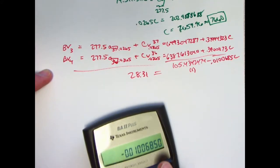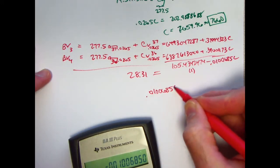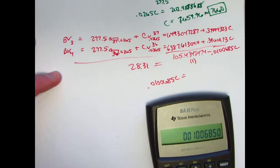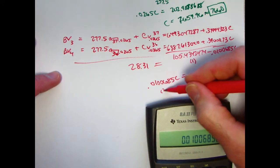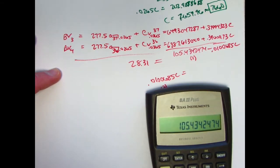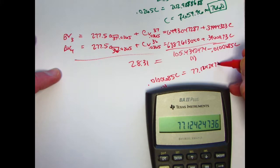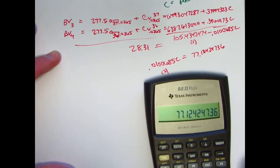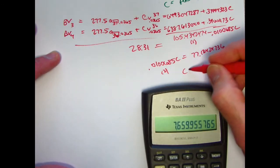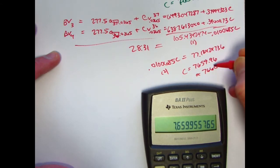And now we have a linear equation that we can solve for C and hopefully get the same answer. I'll write it as 0.0100685C equals, let's negate this thing here, and store that in register 2. This is now in 2. I take what's in register 1, subtract 28.31, recall 1, minus 28.31, 77.12424736, divide by what's now in register 2, recall 2, and I do get the same answer. C is 7659.96, which again rounds to 7660.